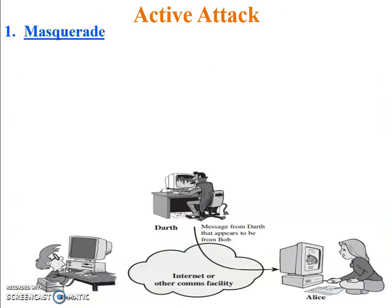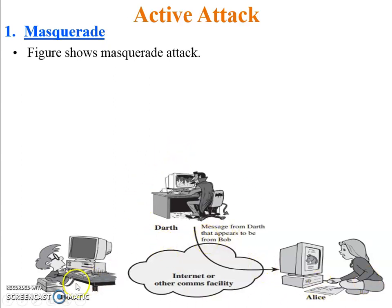First one: masquerade. The figure shows the masquerade attack. In the figure you can see Bob is not sending any message to Alice. But Darth has sent a message to Alice, and that message appears to be from Bob. So Darth sent the message but with the identity of Bob, so Alice does not know whether this is the original sender or not.